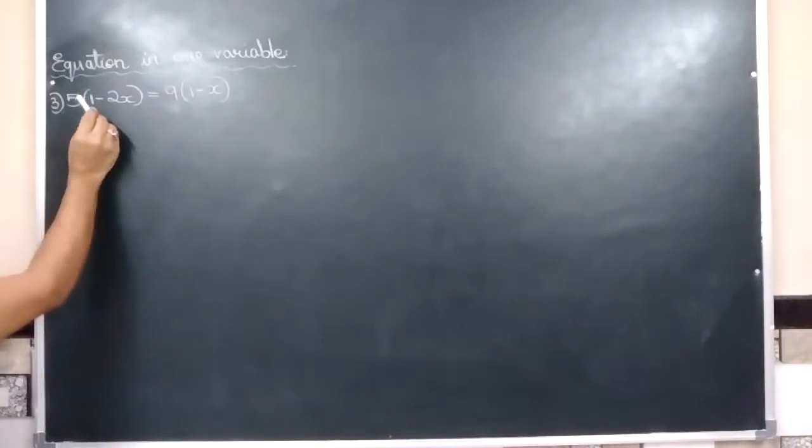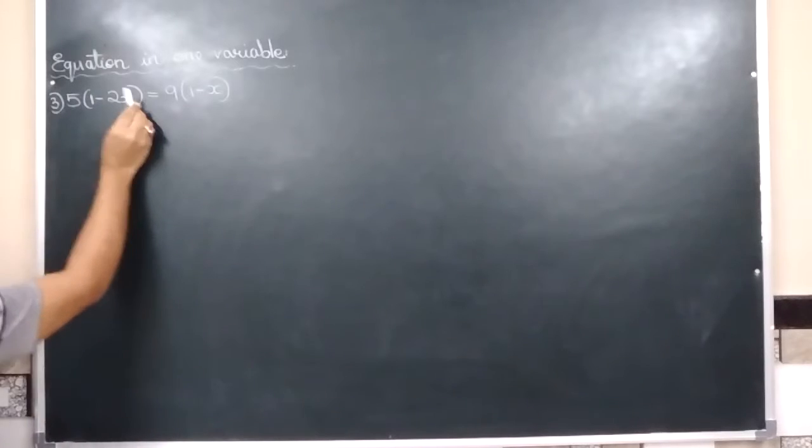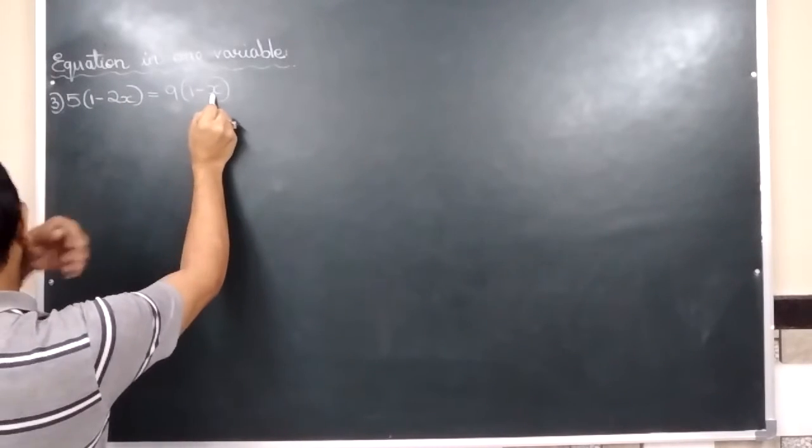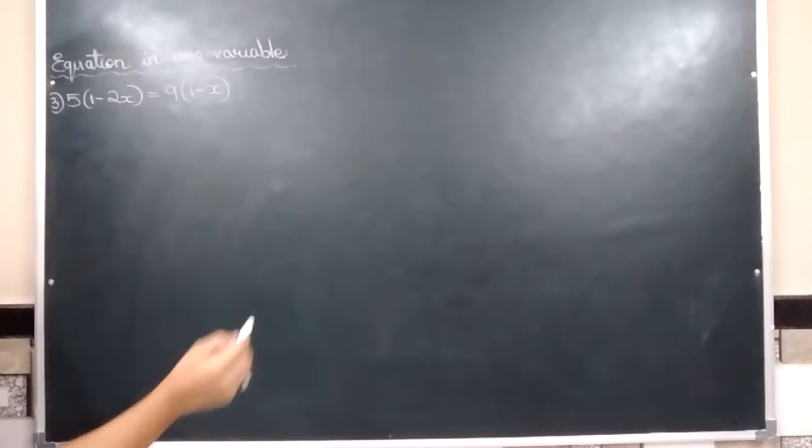Ab aap dek sakte ho. Yaha par e binomial hai jho ek monomial ki saath multiply hooga and same there is a binomial jho monomial ki saath multiply hooga.